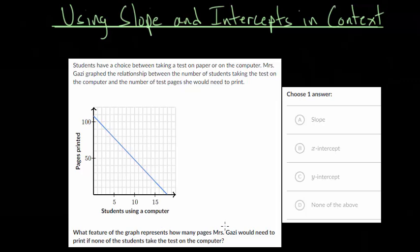So which feature of the graph represents how many pages Mrs. Ghazi would need to print if none of the students take the test on the computer? If none of the students take the test on the computer, that means on this axis we're looking for a value of zero. So that would be right here. So with zero students using the computer, we can go up to our blue line here and figure out what the page printed value is.